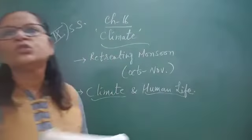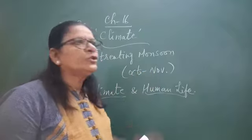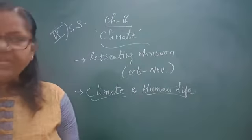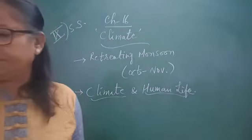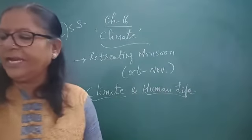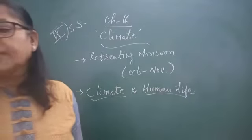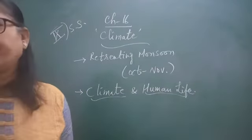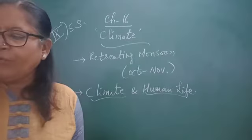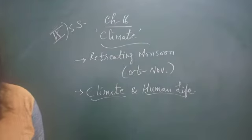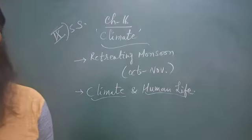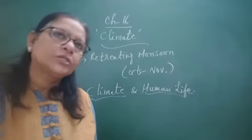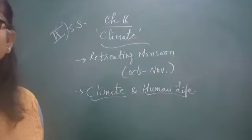Now talking about the retreating monsoon, which lasts for 2 months only, from October to November. During October and November, this period is better known as retreating monsoon — when the monsoon season ends and winter is about to start. The vertical sun rays gradually shift southwards and create low pressure over the Indian Ocean in the south, while high pressure develops gradually over North India. By the end of September, a fresh pressure system develops over the Arabian Sea and Bay of Bengal, which weakens the monsoon winds that have already reached the interior part of India. When the pressure conditions change, these winds start flowing back towards the sea during October and November. So this period is called the season of retreating monsoon.